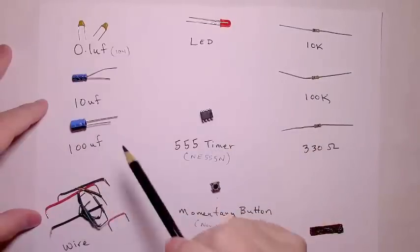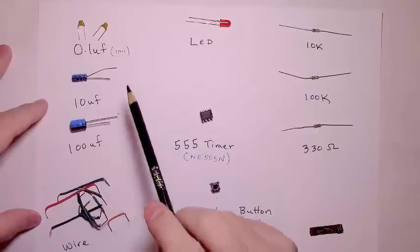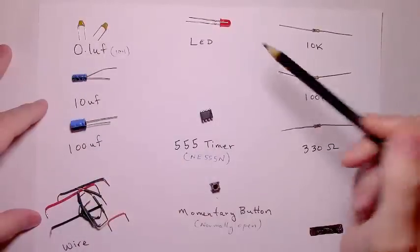A 100uF capacitor, a 10uF capacitor, and two 0.1uF capacitors. They're often marked 104 on their outer casing.